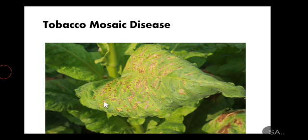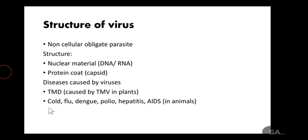This is the tobacco mosaic disease. As you can see, the leaves are deprived of their chlorophyll and they are getting brown yellowish patterns on their leaf structure.